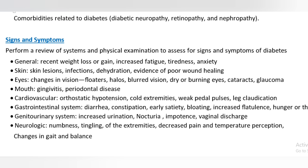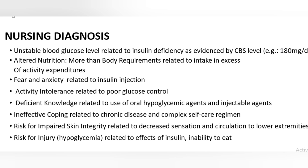Nursing Diagnoses: (1) Unstable blood glucose level, related to insulin deficiency, as evidenced by CBS level — for example, 180 mg/dL. (2) Altered nutrition, more than body requirements, related to intake in excess of activity expenditures. (3) Fear and anxiety, related to insulin injection. (4) Activity intolerance, related to poor glucose control. (5) Deficient knowledge, related to use of oral hypoglycemic agents and injectable agents. (6) Ineffective coping, related to chronic disease and complex self-care regimen. (7) Risk for impaired skin integrity, related to decreased sensation and circulation to lower extremities. (8) Risk for injury — hypoglycemia — related to effects of insulin and inability to eat.